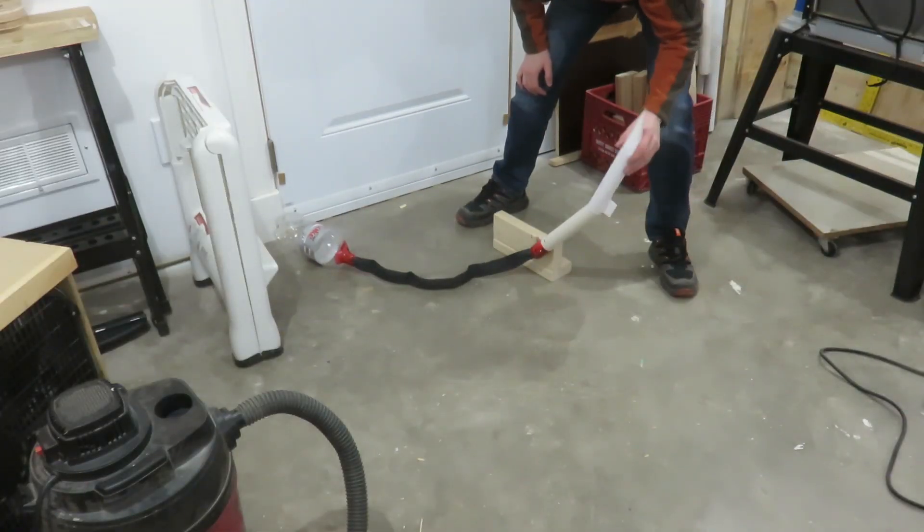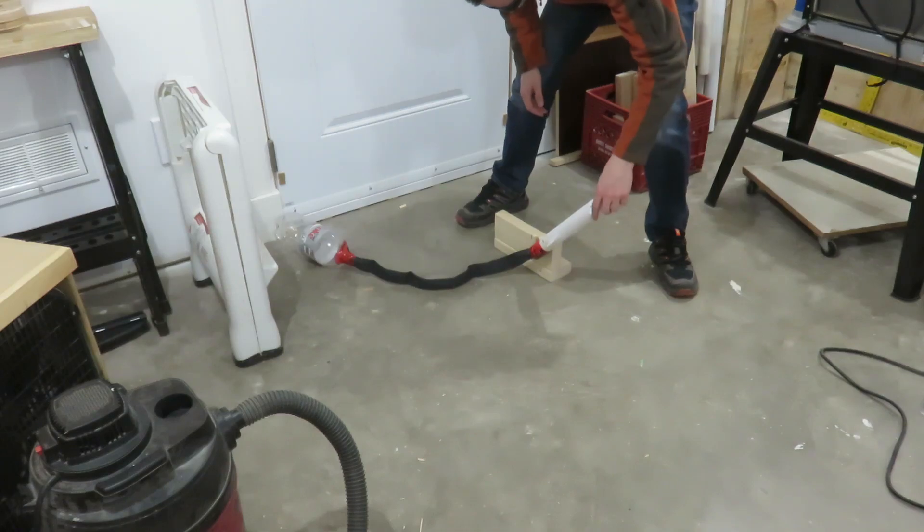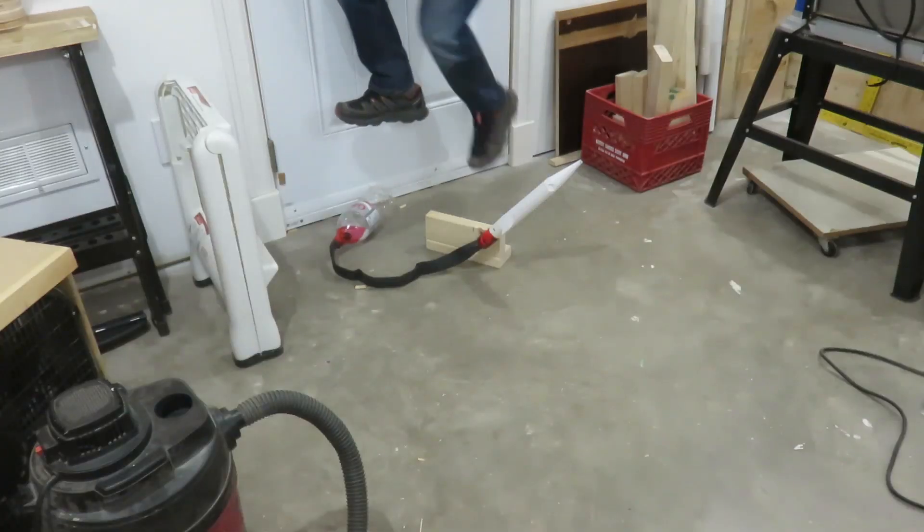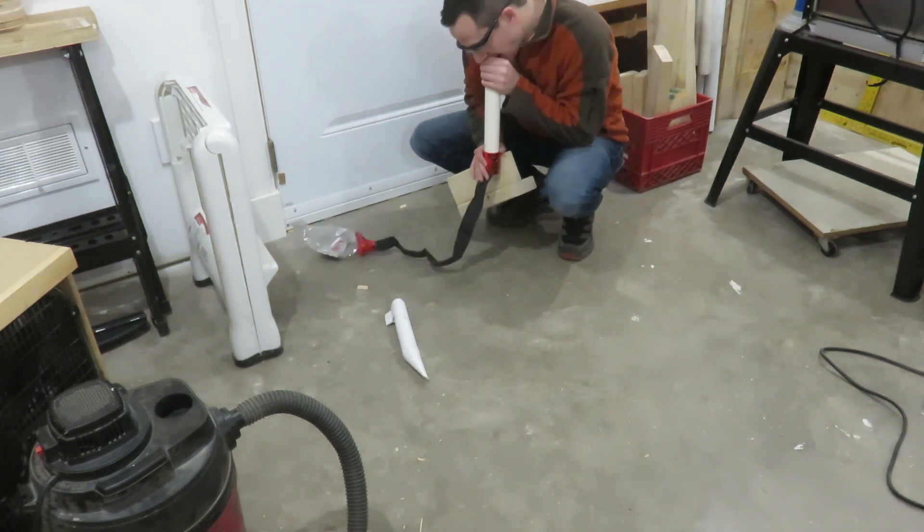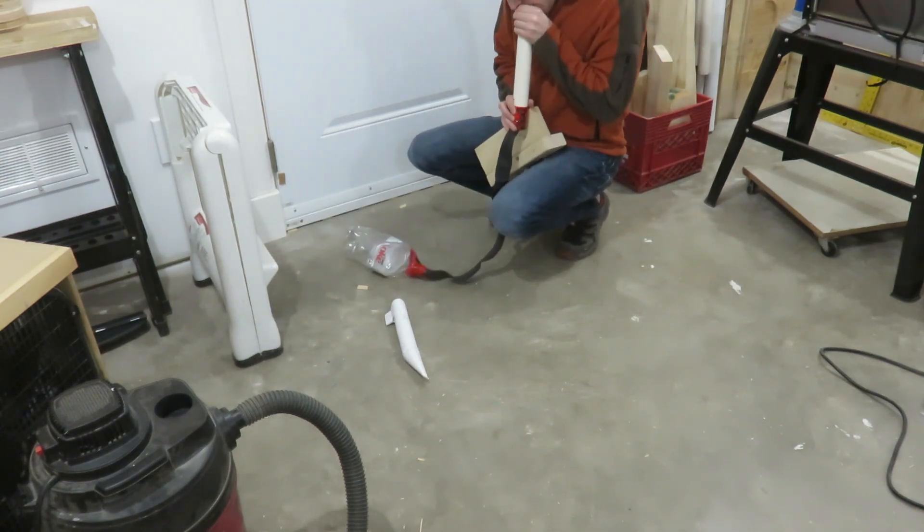With the paper rocket completed the fun can begin. Slide the paper rocket onto the PVC pipe. Initiate the countdown then jump on the two liter pop bottle to launch the paper rocket.